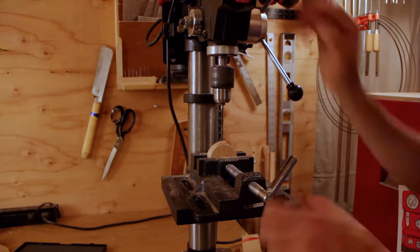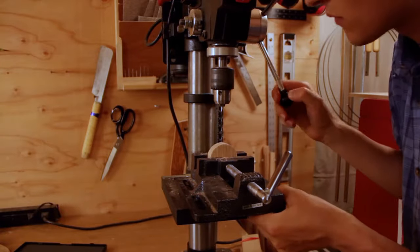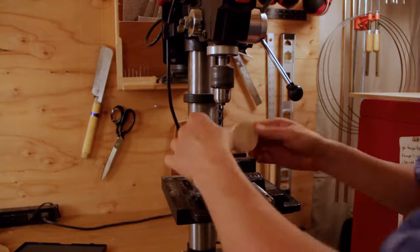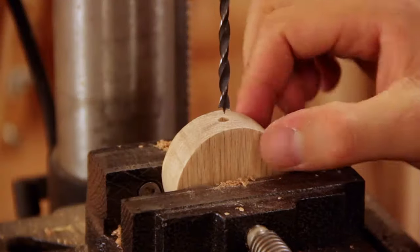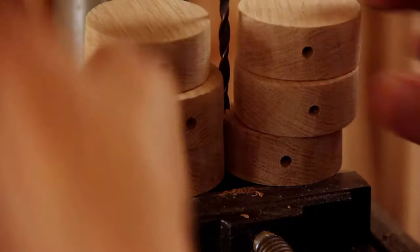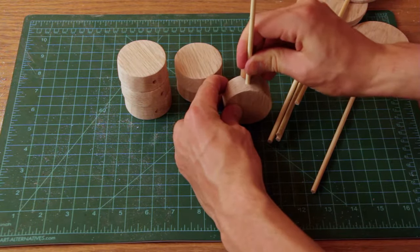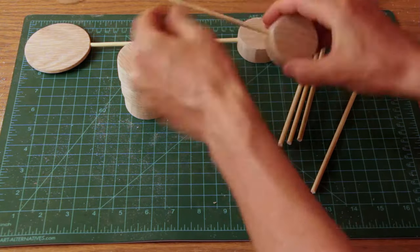Now drilling holes in the inner counterweights to attach them to the dowels. They're just going to slide over and hold on there with a pressure fit.